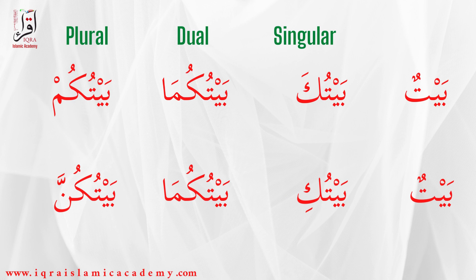Baitukuma — your house (dual). Baitukum — your house (masculine plural). Baitukuma is for dual and Baitukum is for plural. Baitun — a house. Baituki — your house (feminine singular). Baitukuma — your house (feminine dual).